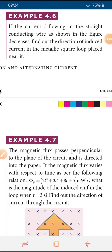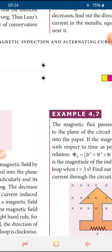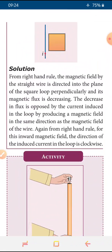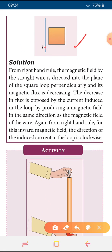Good morning children. This is unit number four, electromagnetism effects, which we are discussing in this class. Today we will start with Example 4.6. The question is: if the current I flowing in the straight conducting wire as shown in the figure decreases, find out the direction of induced current in the metallic square loop placed near it.